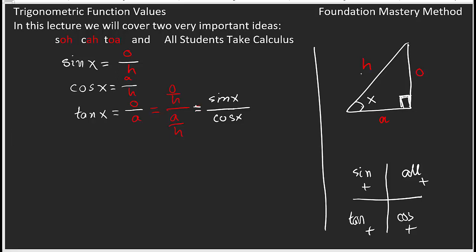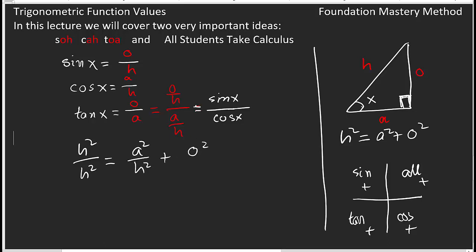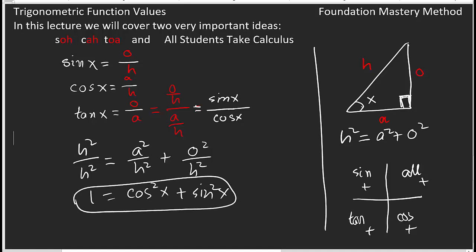From the right triangle, everybody knows that hypotenuse squared equals adjacent squared plus opposite squared — the Pythagorean theorem. If we divide each term by H squared, we get H²/H² = A²/H² + O²/H², which gives 1 = cosine squared X plus sine squared X. This is known as the Pythagorean trig identity and is true for all values of X.